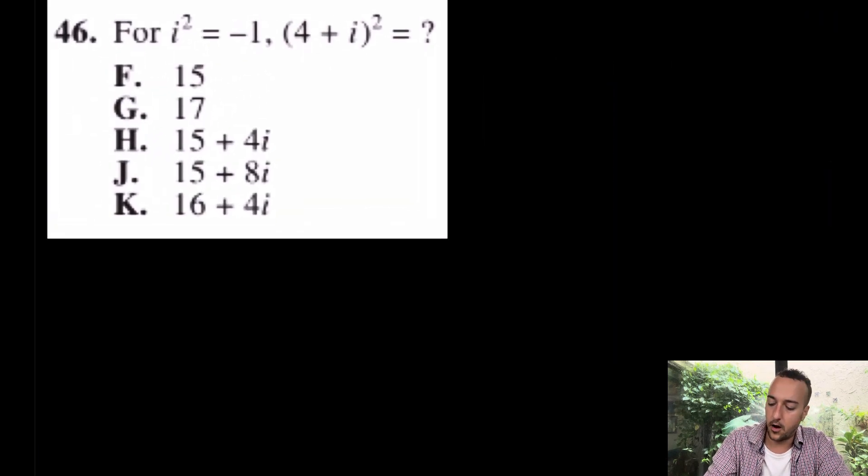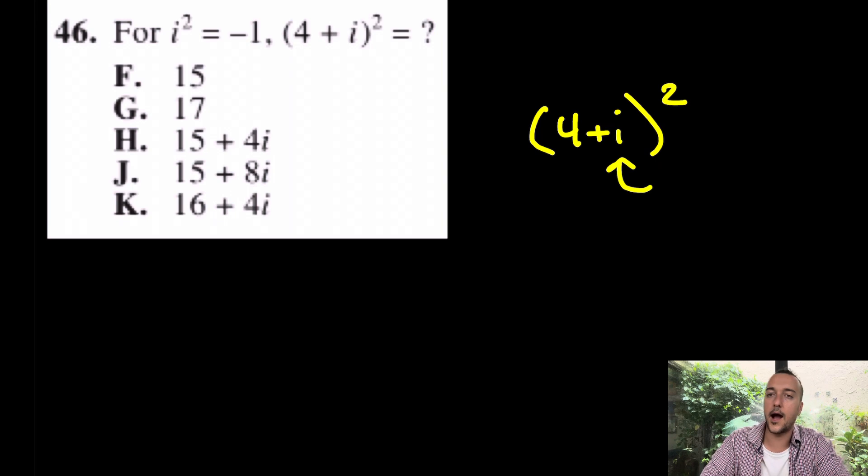Try number 46 with me. All you have to do is, on your home screen, put a parenthesis, put 4 plus i squared. Again, how do you get i? i is second period. Let's put that in together. Let's do it in real time. 4 plus i squared, and you get J, 15 plus 8i. How easy was that? Beautiful. That was 46.